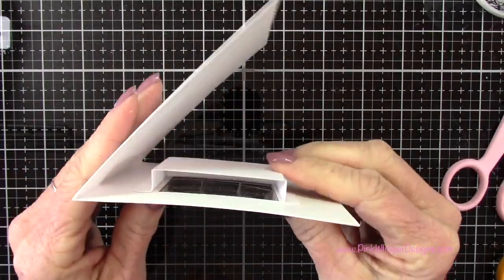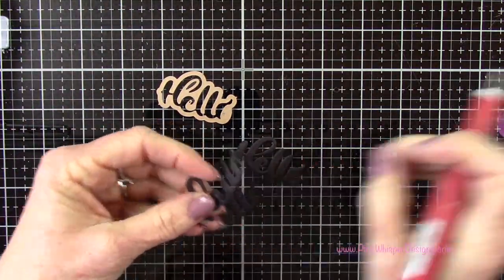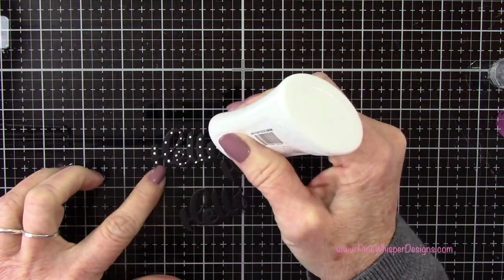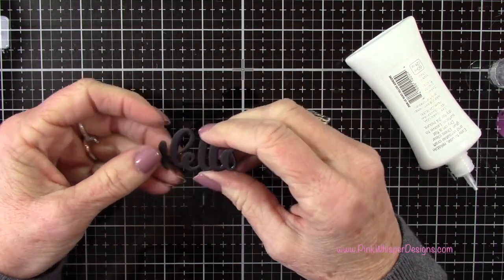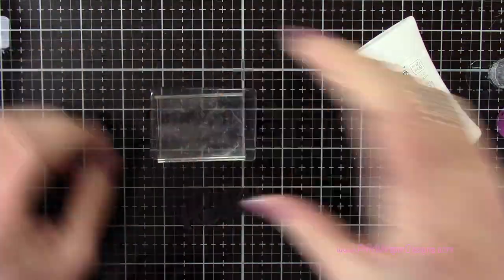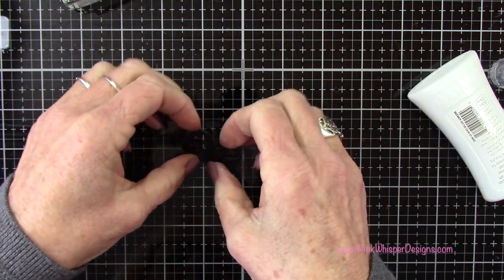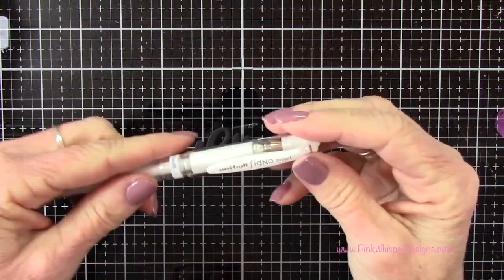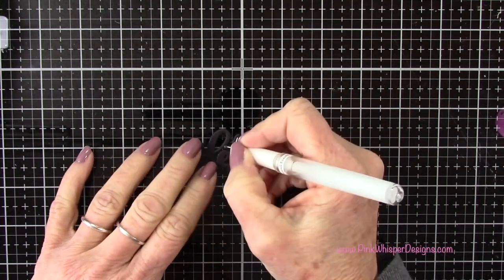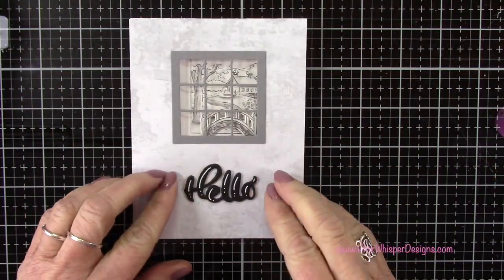Now that we have that part all set, let's go ahead and finish off with the sentiment. I've taken that hello die that I showed you earlier and I've gone ahead and die cut it three times from some black 100 pound cardstock. I'm just going to glue these three together. You do want to take a little time here to make sure you line these up really well. Once that's all set, I'm going to add a little bit of highlight here with my Uni-ball Signo white gel pen. I'm just going to add some little highlights here and there. This will just make this sentiment pop off the card just a little bit more.